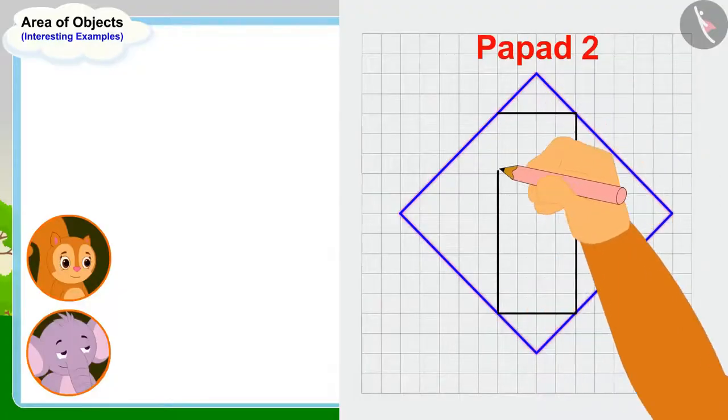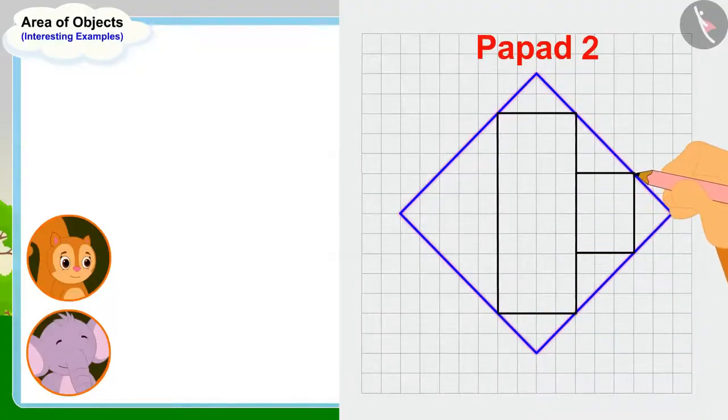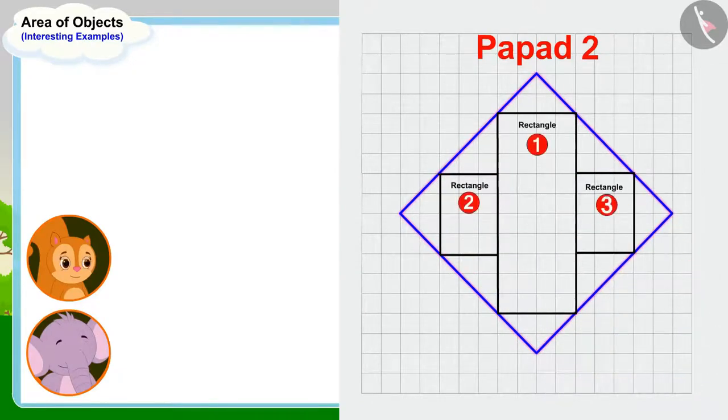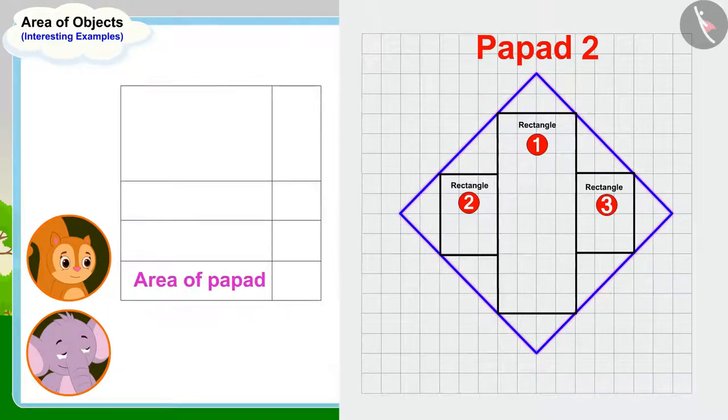Then Chanda made such rectangles in the area enclosed by the outline of the second papar. She then wrote down the number of squares falling in those rectangles in this way.